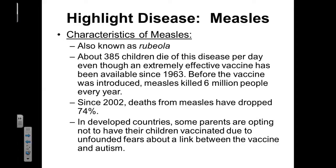Our first disease we're going to focus on is measles. Measles is a disease that's highlighted in your textbook. Another name for measles is rubella. Approximately 385 children die from measles every day, despite the fact that we have a very effective vaccine that has been available for over 50 years. Before the measles vaccine was introduced, approximately 6 million people died from measles every year.